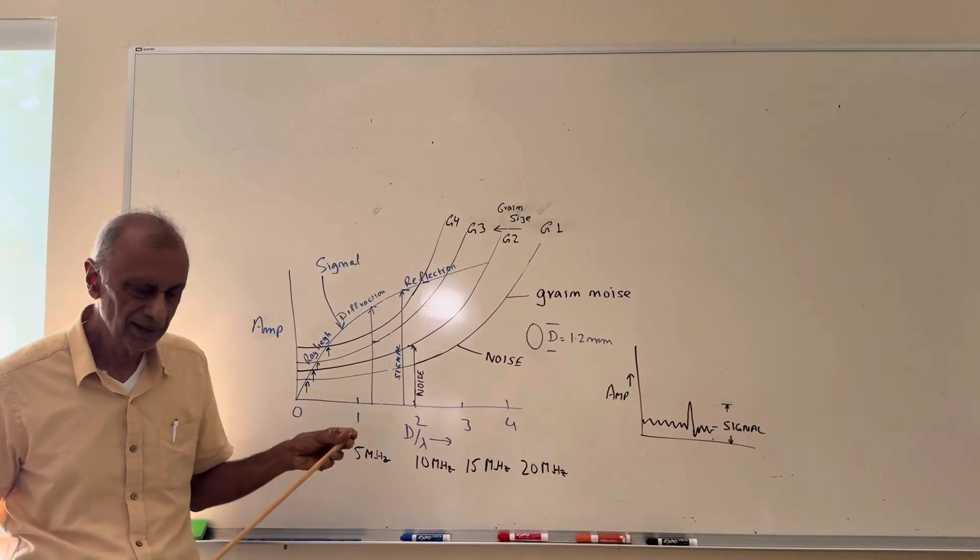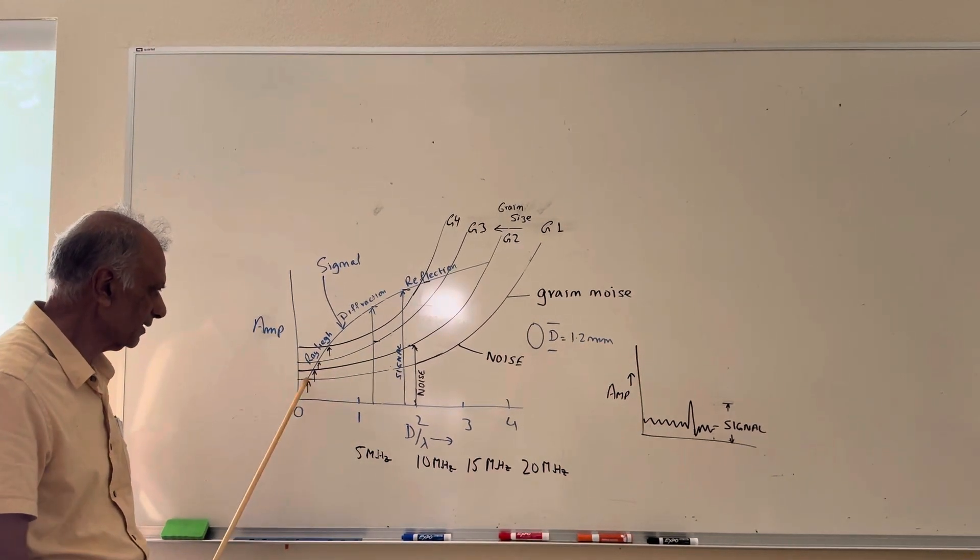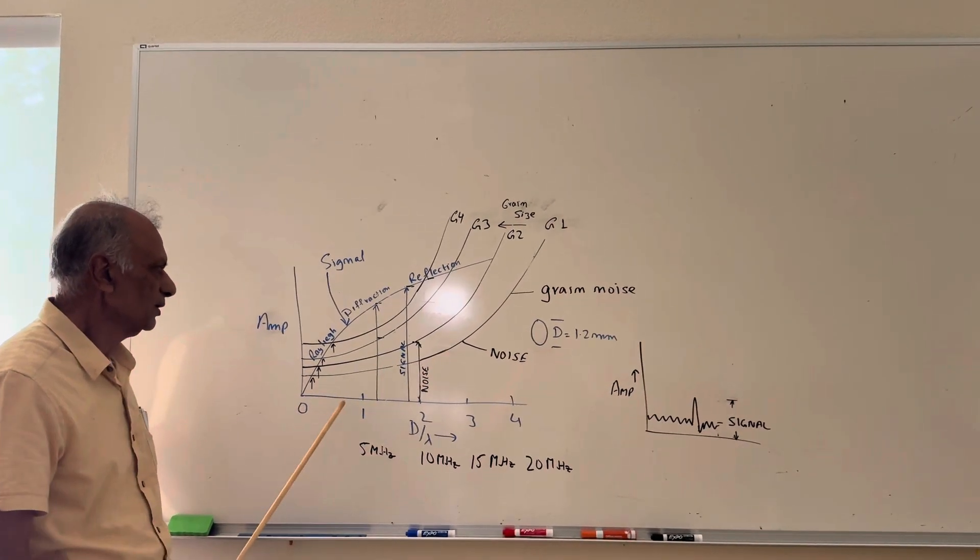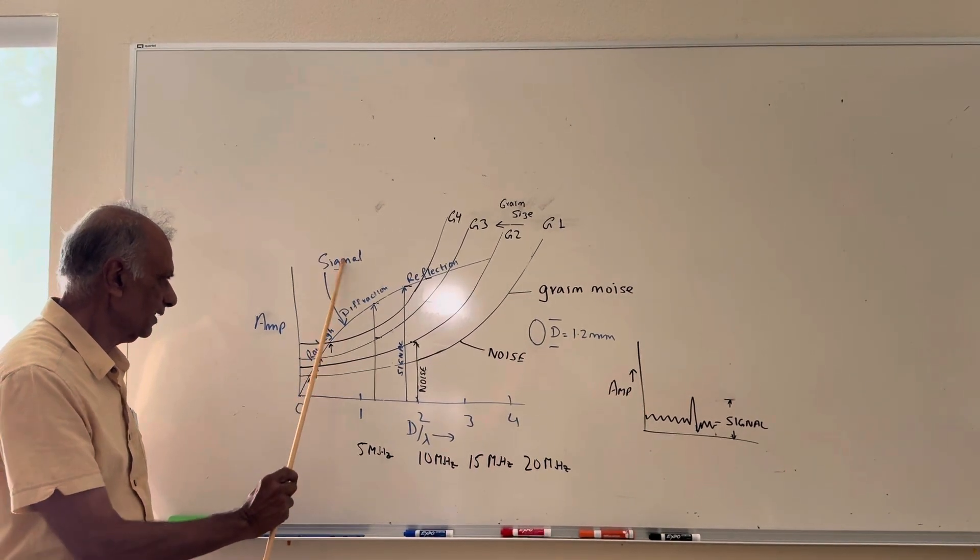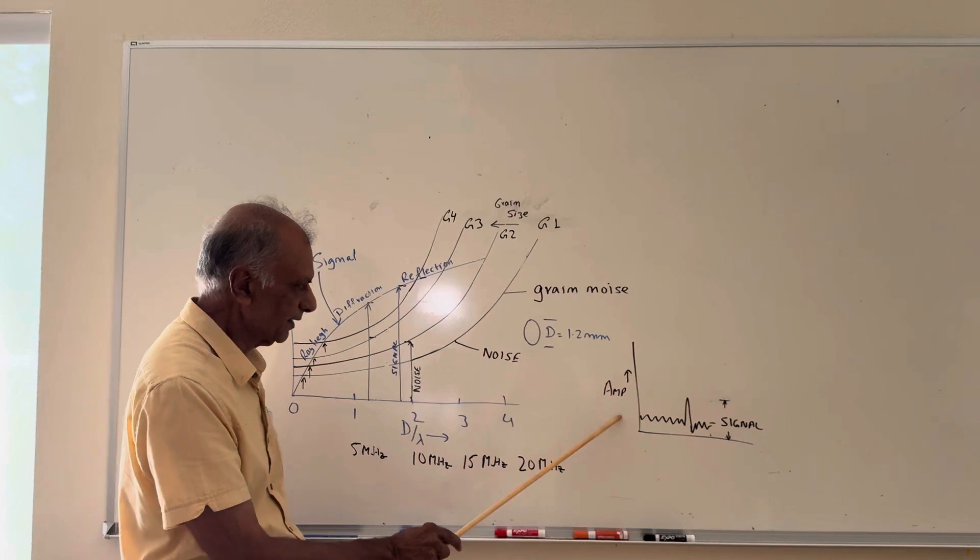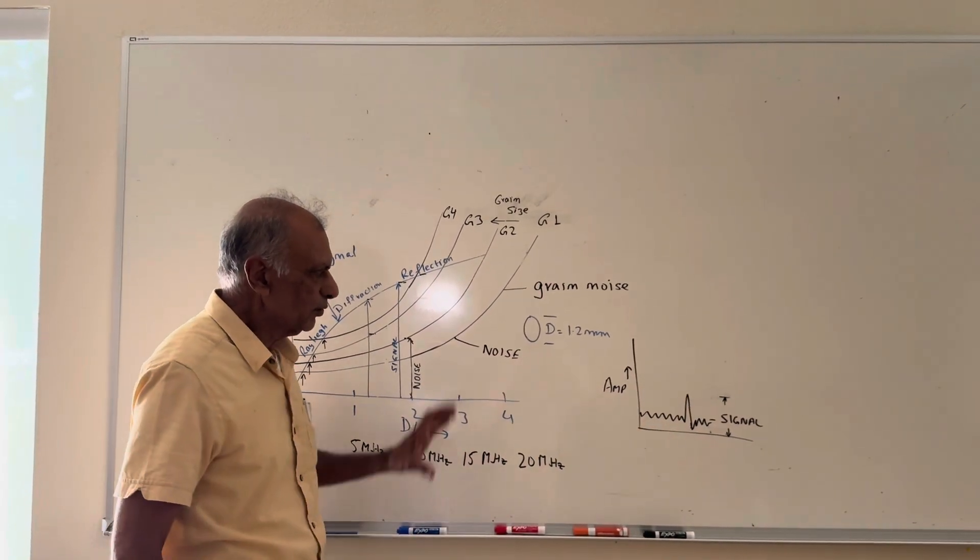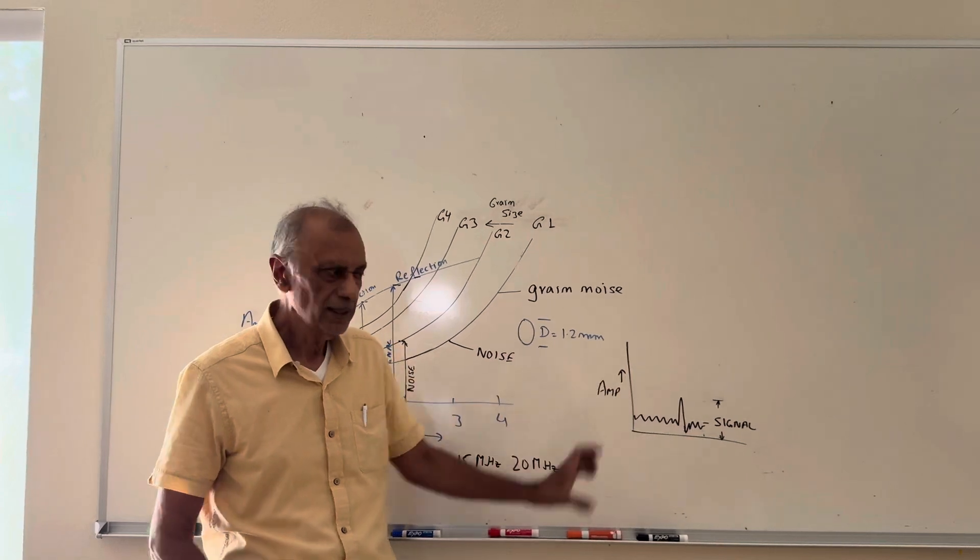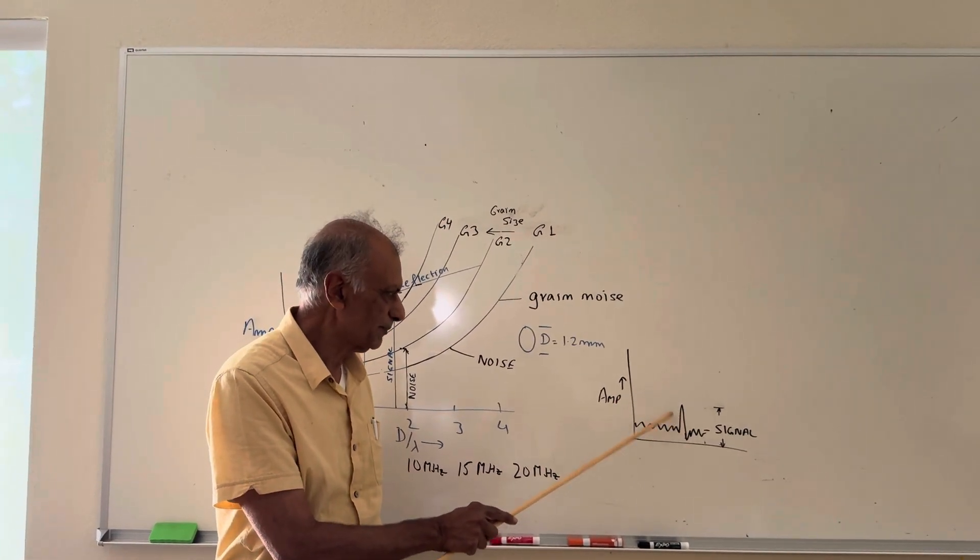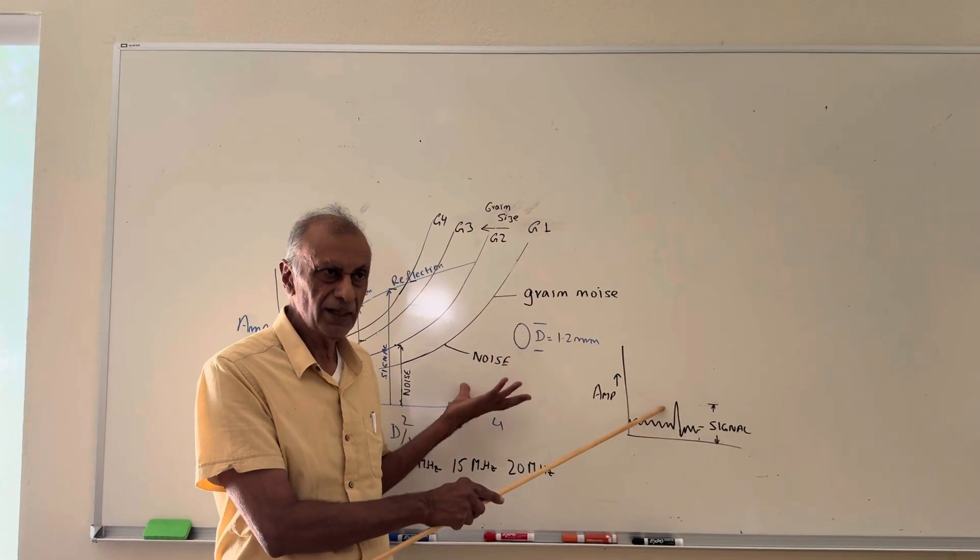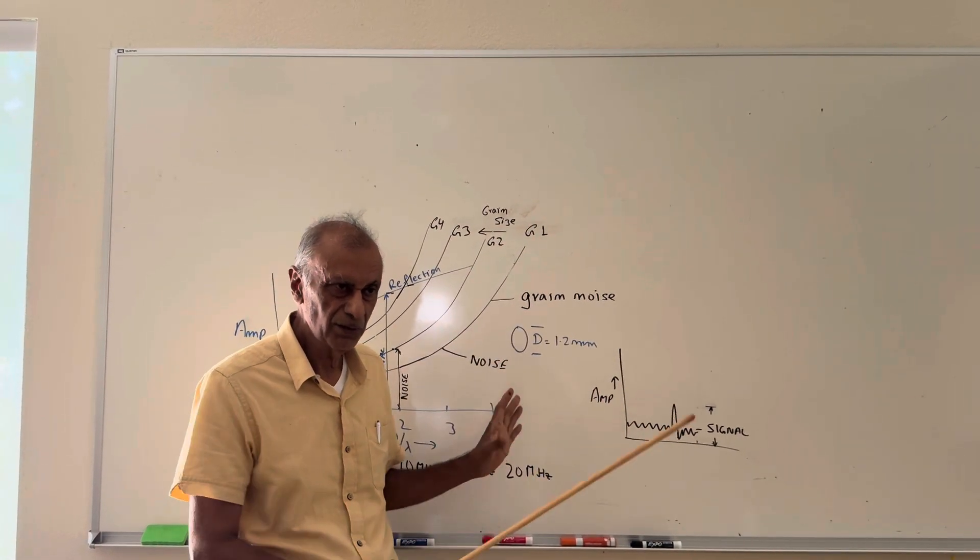This blue line is your signal level, and these black lines are the background noise levels. When we do ultrasonic testing, we have what's called the signal and the noise. Here we have a scan signal, and you can see the signal is here and the noise is here. You can only detect a flaw if the signal is higher than the noise. Once the noise becomes too large—for example, if you are at 20 megahertz—your noise will be much more than the signal, so you will have no detection.